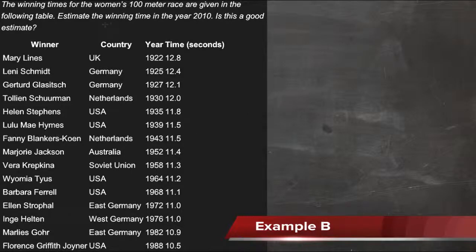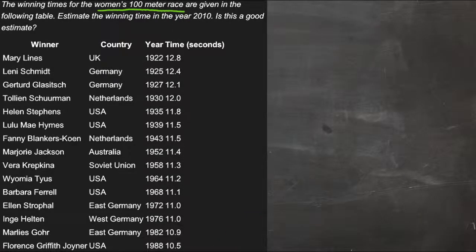So what we have here in example B is the winning times for the women's 100-meter race over the years, starting in 1922 and going to 1988, and we need to estimate the winning time in the year 2010. And then we're going to take a look at that estimate and see if it seems reasonable.